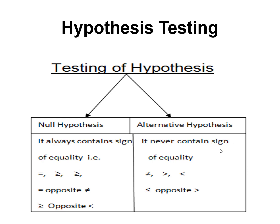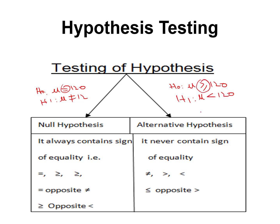In hypothesis testing, the null hypothesis always contains the sign of equality. For example, if H0 is: mean equals 120, then the alternative will be: mean is not equal to 120. Or if H0 is: mean is greater than or equal to 120, the alternative will be: mean is less than 120. If H0 is: mean is less than or equal to 120, then H1 will be: mean is greater than 120. The null hypothesis always includes the sign of equality.